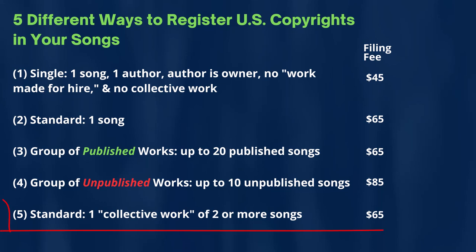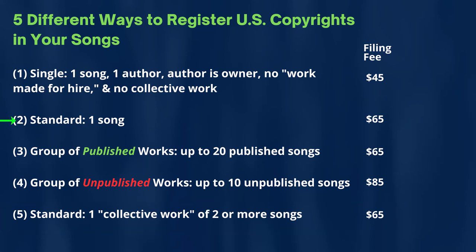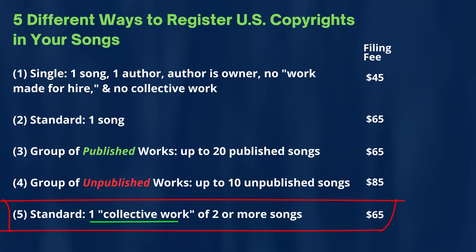Lastly, number five is also another example of the standard application being used. In number two, you were filing a single song. But here in number five, you're filing what's called a collective work using the standard application — a collective work would be two or more songs. Currently, the U.S. Copyright Office governmental filing fee is $65.